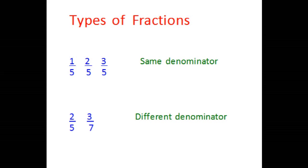So what happens when the denominator is the same? It is easy to compare. If you look at 2 over 5 and 3 over 5, you know that 3 over 5 is bigger than 2 over 5, because if I make 5 parts of something and pick up 3, it would be more than picking up 2 parts.